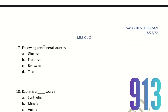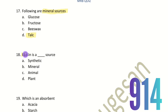Seventeenth question: Which of the following are mineral sources? The choices are glucose, fructose, beeswax, and talc. Talc is a mineral source. Eighteenth question: Kaolin is a dash source. The choices are synthetic, mineral, animal, and plant. Kaolin is not plant or animal. It is a mineral source — Kaolin and talc both come under mineral sources.